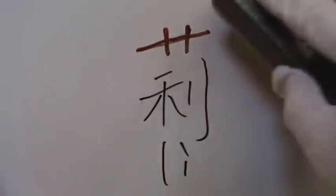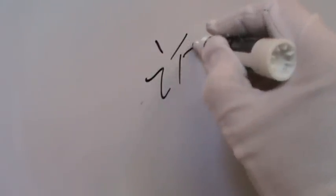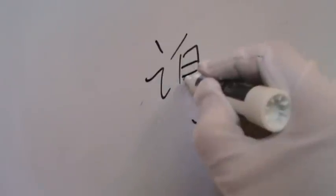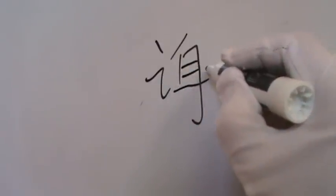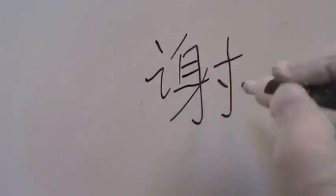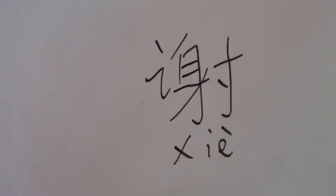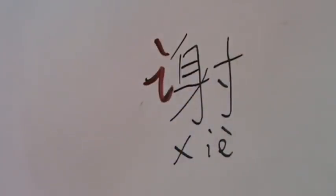Number nine: 谢 (Xie), written with 12 strokes. Xie means to thank or thanks. It also serves as a surname, like 谢小姐 (Xie Xiao Jie). And the radical is this one on the left.